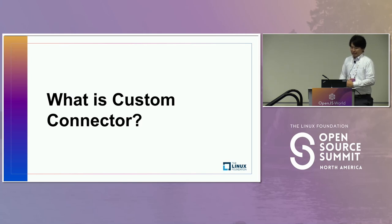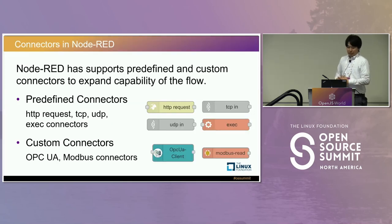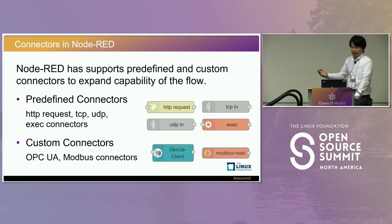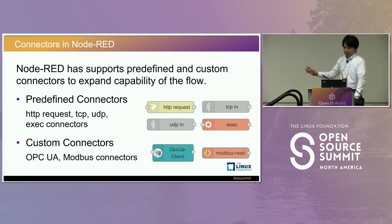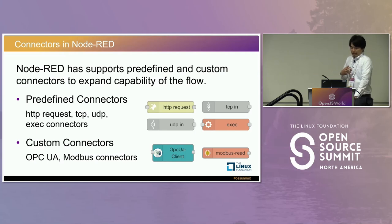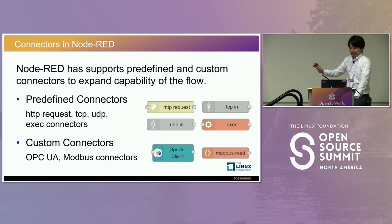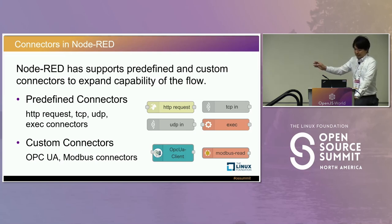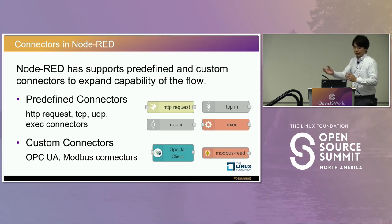Let me start to explain development of connectors. After you open the Node-RED flow editor, you can see predefined connectors on the left palette. For example, the HTTP connector can access REST APIs, and TCP and UDP connectors can communicate with devices using those protocols. The exec connector can execute CLI commands in the background. If a flow developer needs industrial-specific protocols, they can install additional connectors. On the Node-RED flow library, there are OPC UA and Modbus connectors to connect to factory devices.